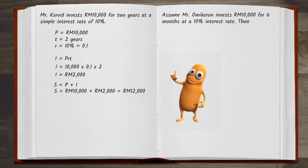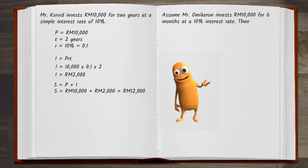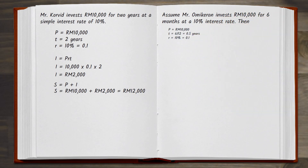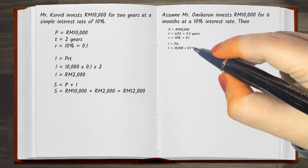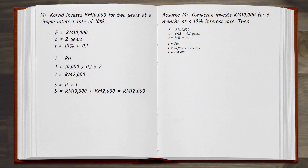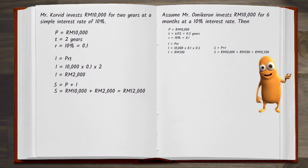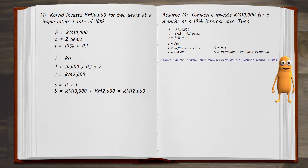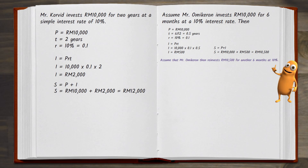Now suppose that Mr. Micron invests RM10,000 for six months, also at a ten percent interest rate. Mr. Micron would have RM10,500 at the end of his six-month investment. He then reinvests this RM10,500 for another six months at a ten percent interest rate.